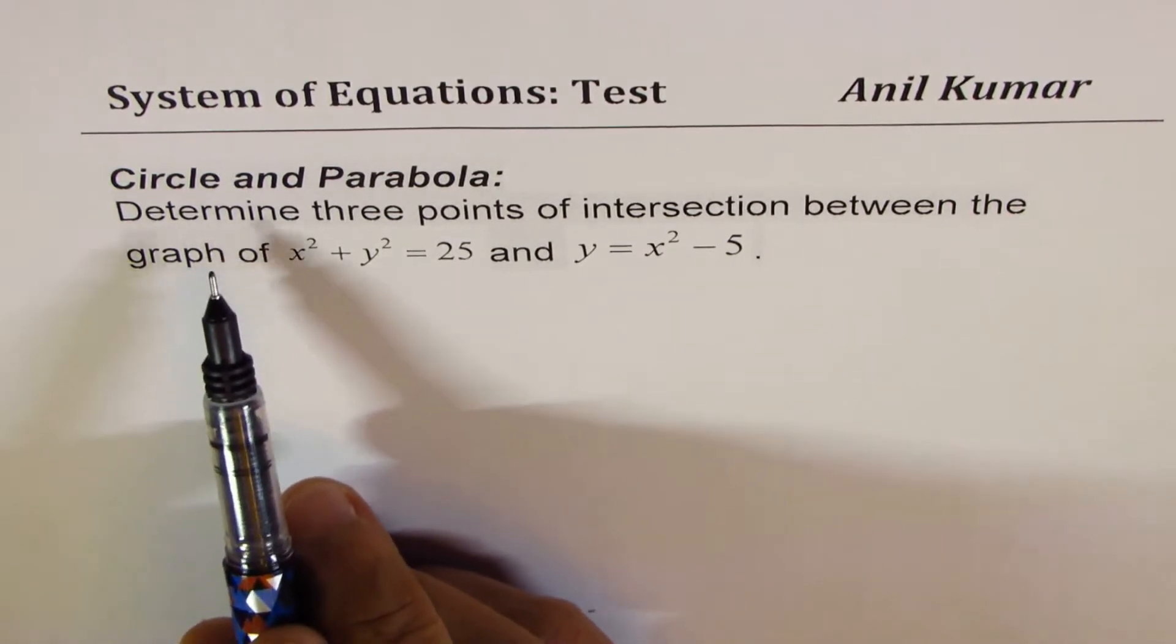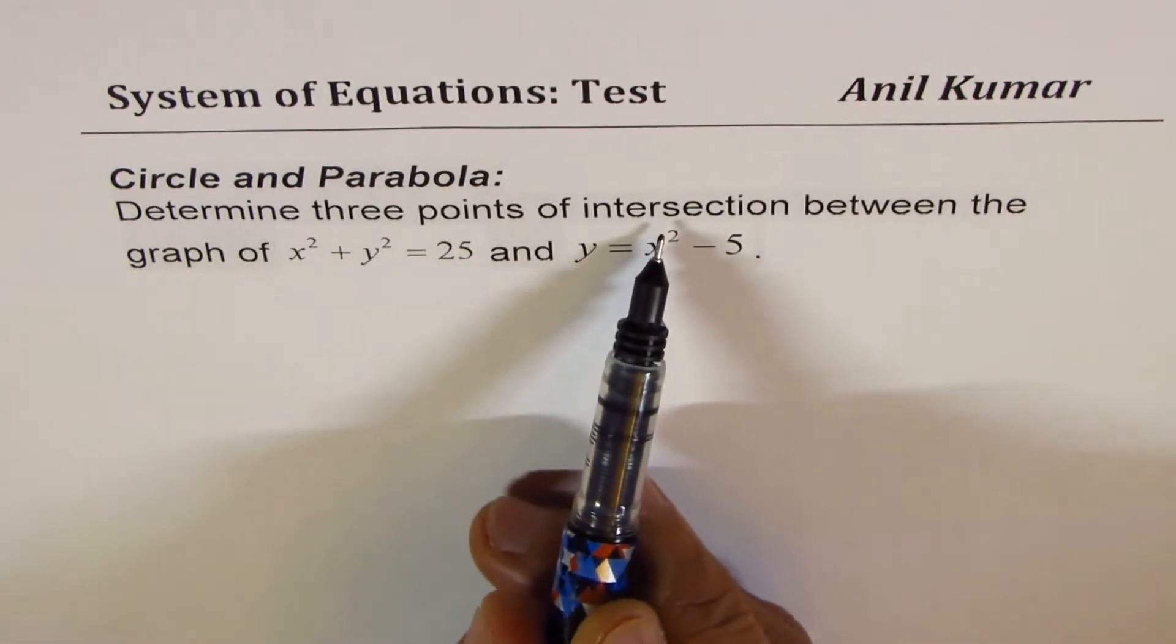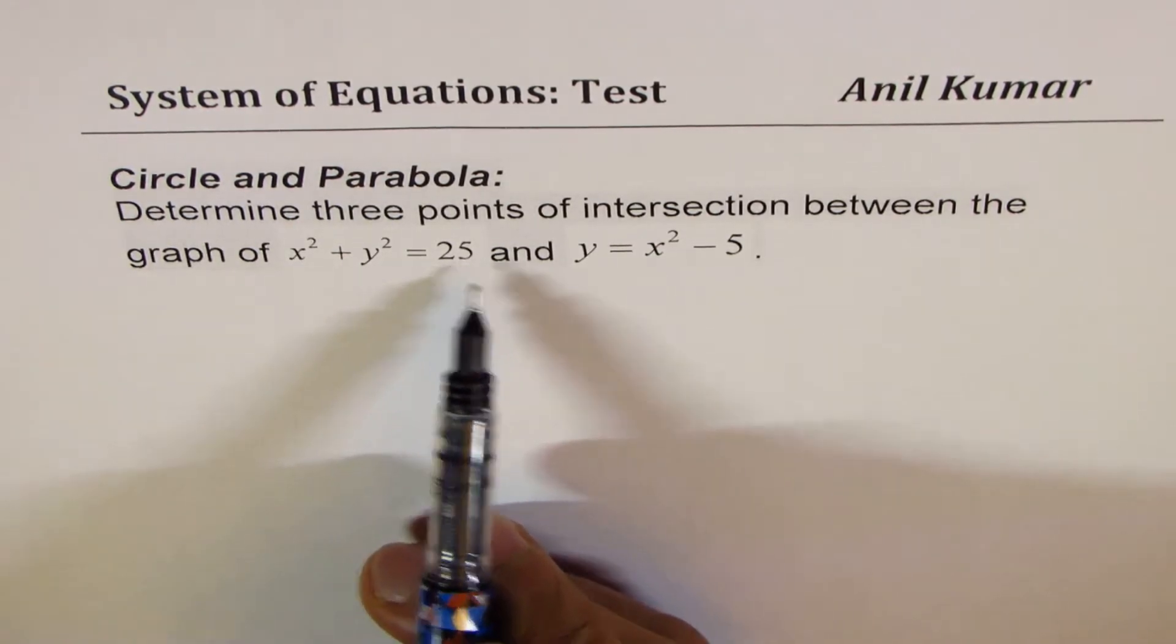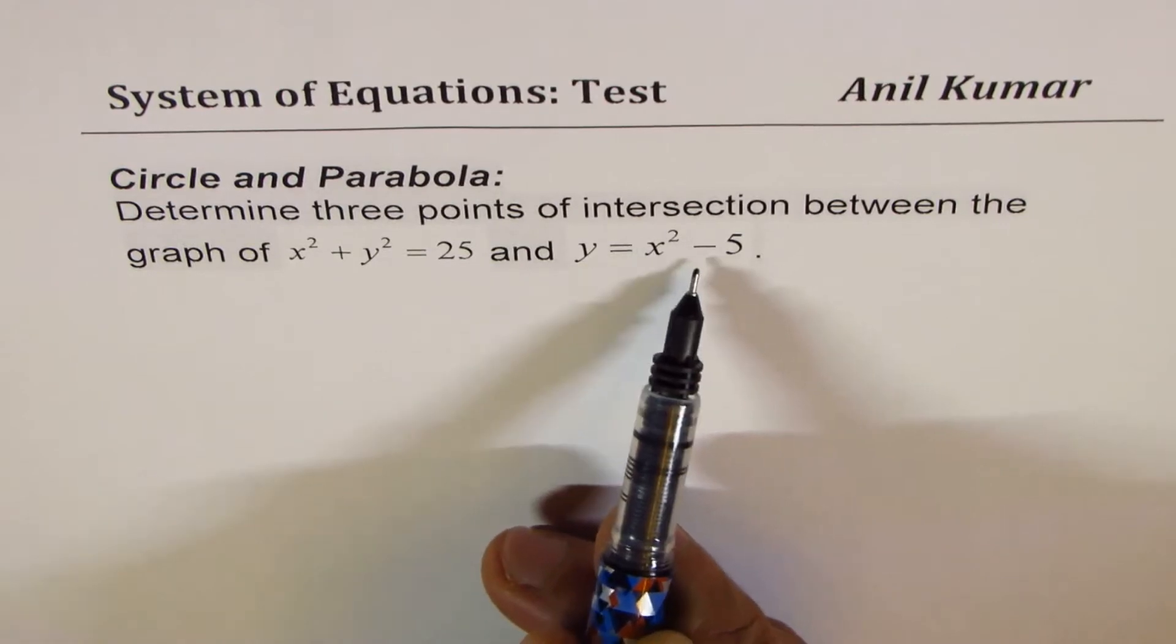The equation is: determine three points of intersection between the graph of x squared plus y squared equals 25 and y equals x squared minus 5.